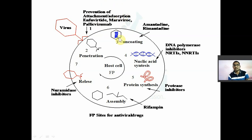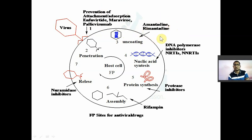The third step is uncoating — release of genetic material from the capsid. This step is prevented by Amantadine and Rimantadine. Out of these, Amantadine also releases dopamine, so it is also useful in Parkinsonism.